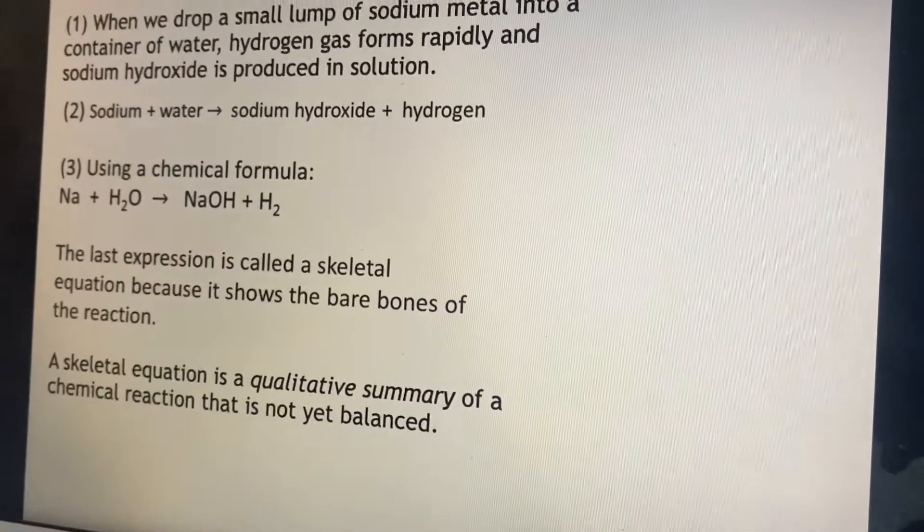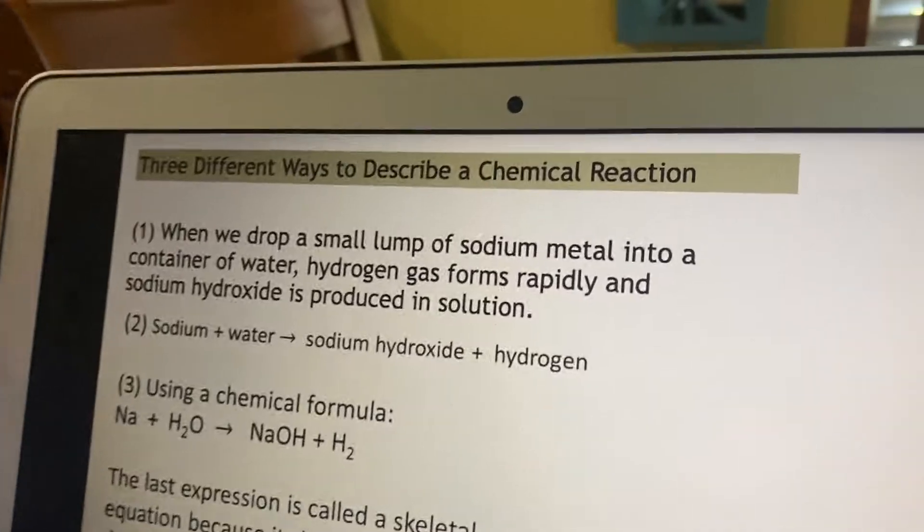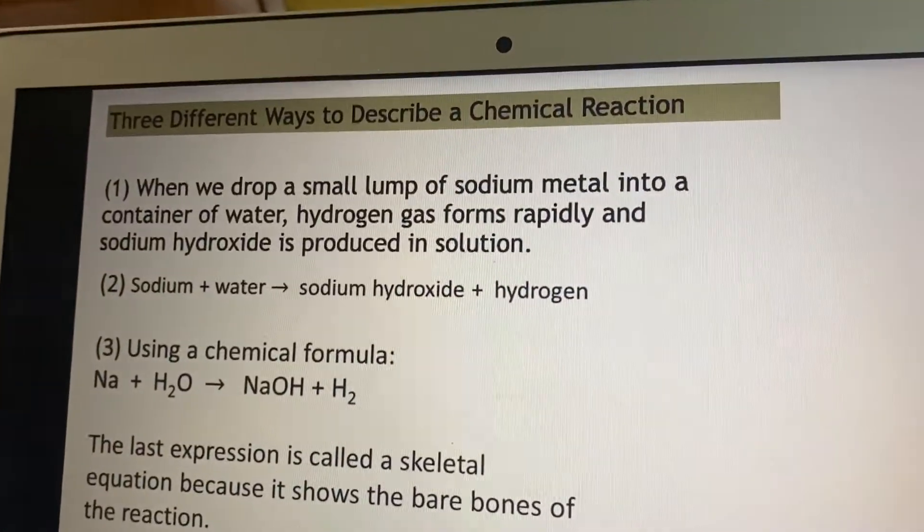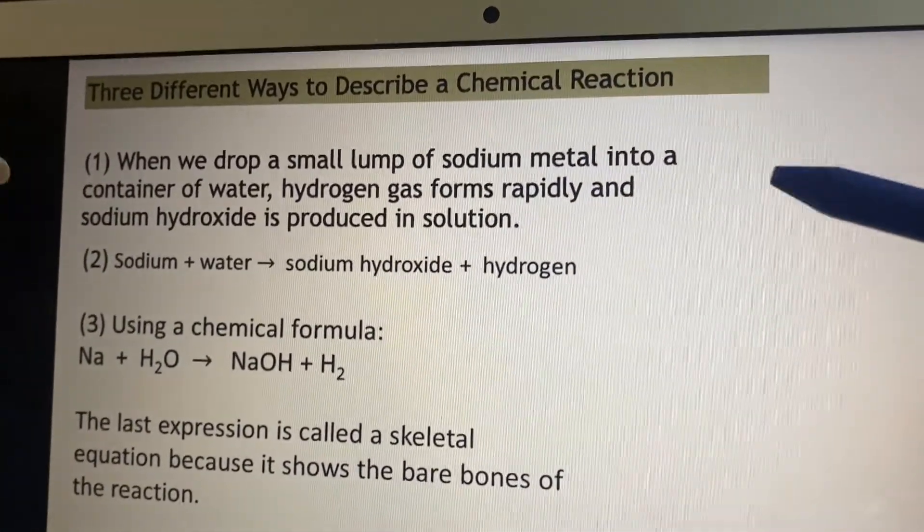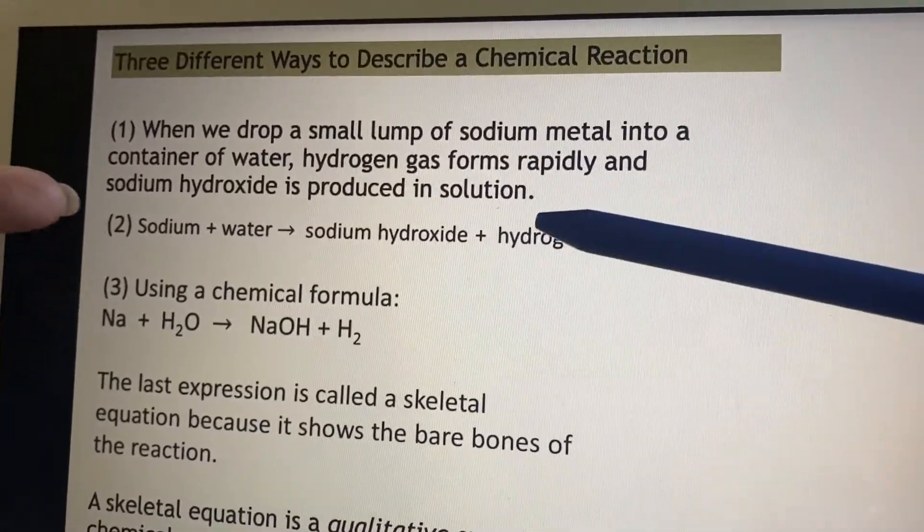Okay, chapter seven is on stoichiometry. When we have a chemical reaction occur, we can describe it in different ways. First of all, we can say what happened.